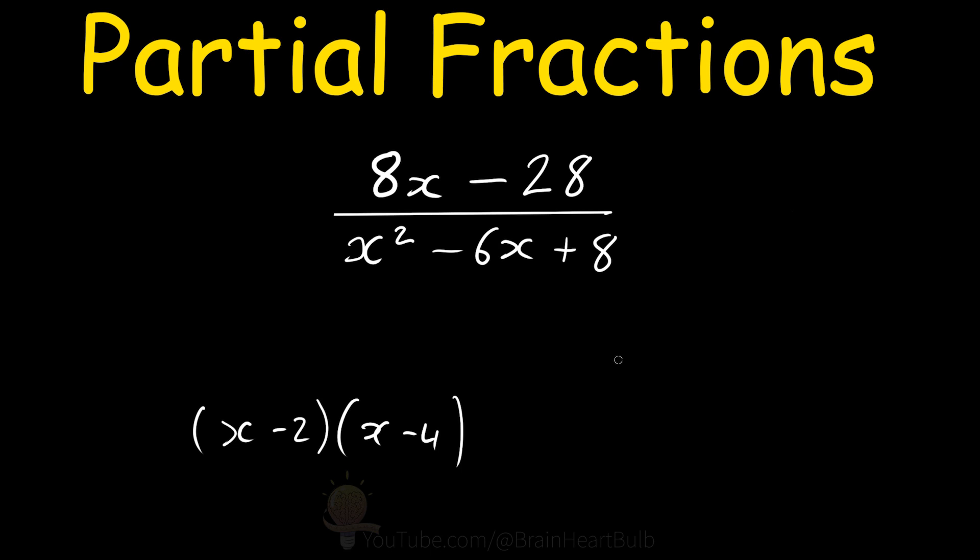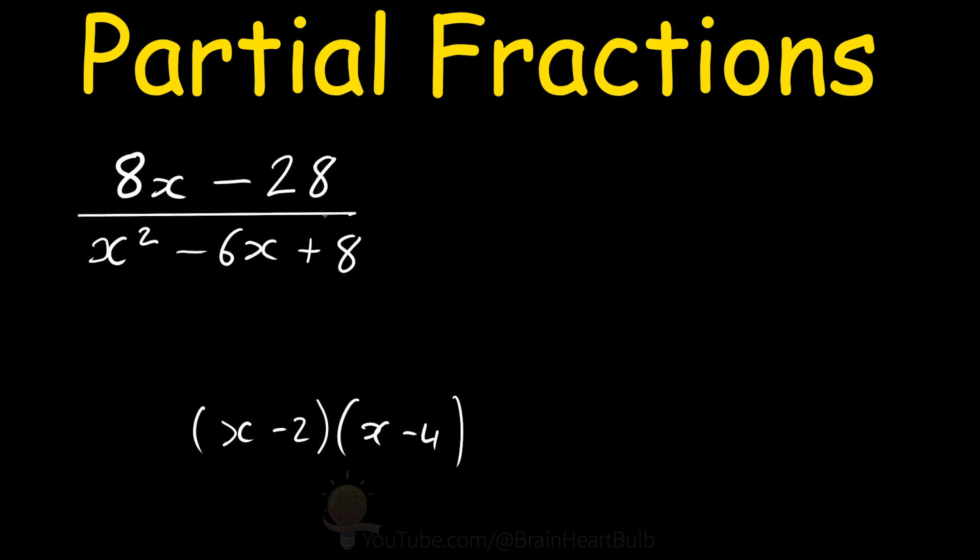So with each of these factors, we now assume that each of these simple factors in the denominator gives rise to a single partial fraction. In other words, we can write the left side of the equation here as A over x minus 2 plus B over x minus 4, where A and B are constants.